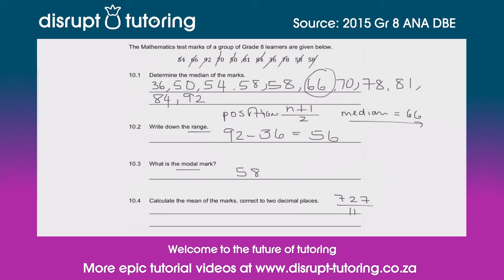727 divided by 11 gives us 66.090909..., which goes on forever. They've asked for two decimal places, so the answer is 66.09. The symbol for the mean is an x with a little bar on top, and we can write that equals sign to show the formula leading to the final answer.